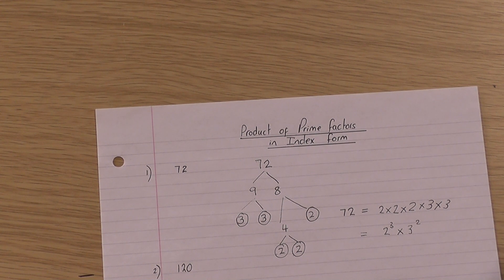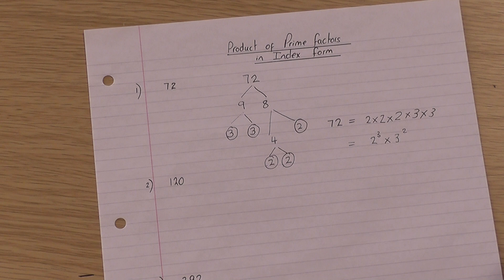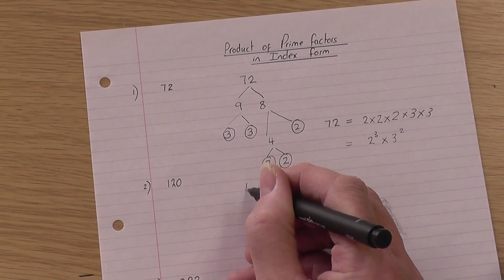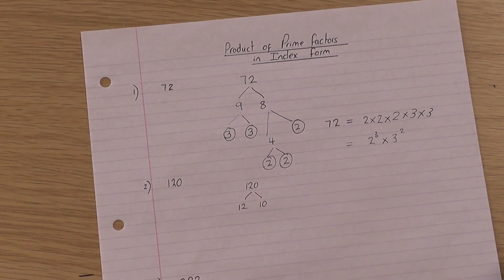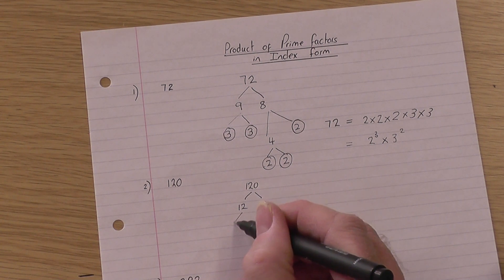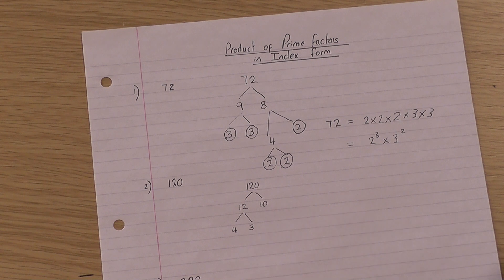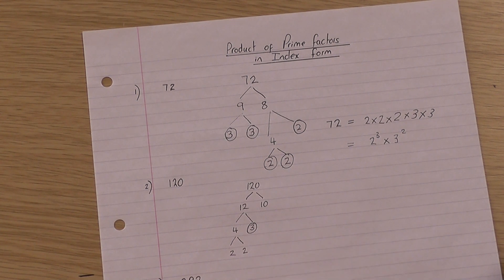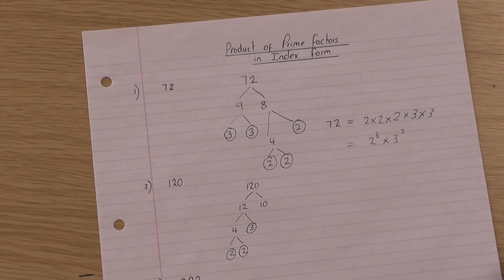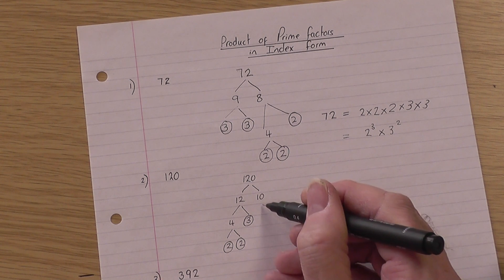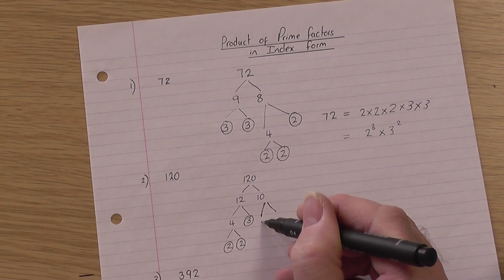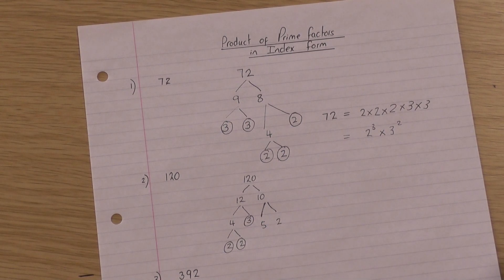So 72 is the same as 2 cubed times 3 squared — we've expressed 72 as a product of prime factors in index form. Index form means power form. Let's do the second question quickly: 120. I'd split that into 12 times 10 because it ends in zero. 12 is not prime so I use 4 times 3 — you could use 6 times 2. 3 is prime so I circle it; 4 is not, so carry on: 2 times 2 is 4, and both 2s are prime. The 10 is not prime, so split it: 5 times 2 is 10, and both 5 and 2 are prime — picture complete.